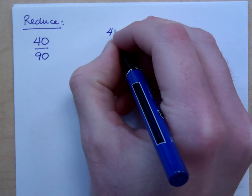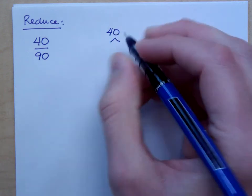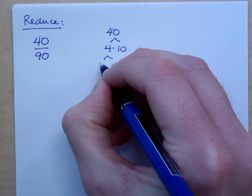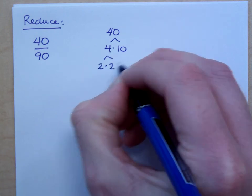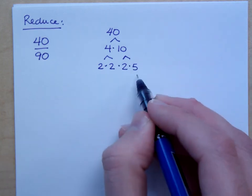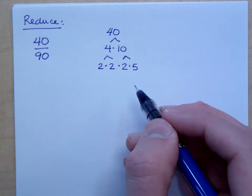But I want you to look at what 40 looks like in terms of its prime factorization. 40 is 4 times 10. 4 breaks down as 2 times 2, and 10 breaks down as 2 times 5. These are your prime factors. You can't go any further with that.